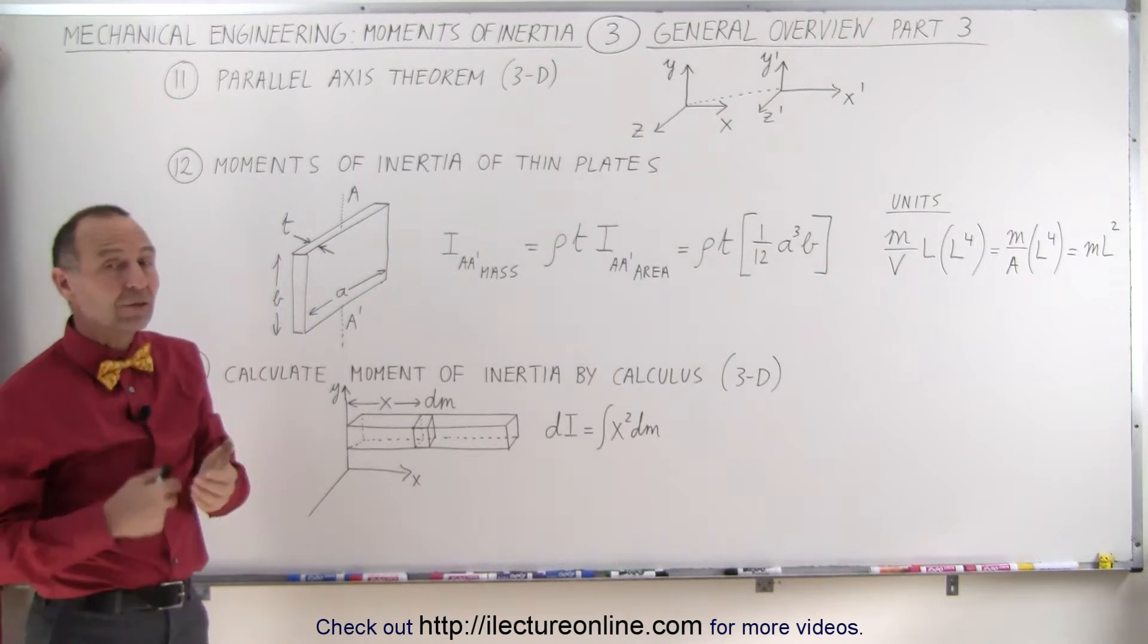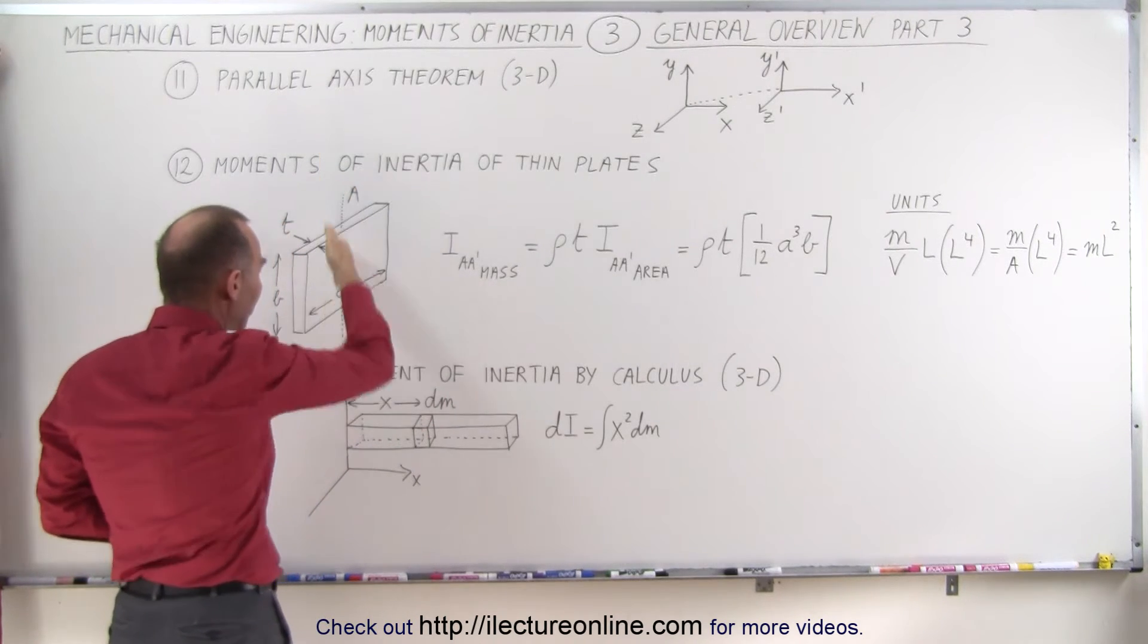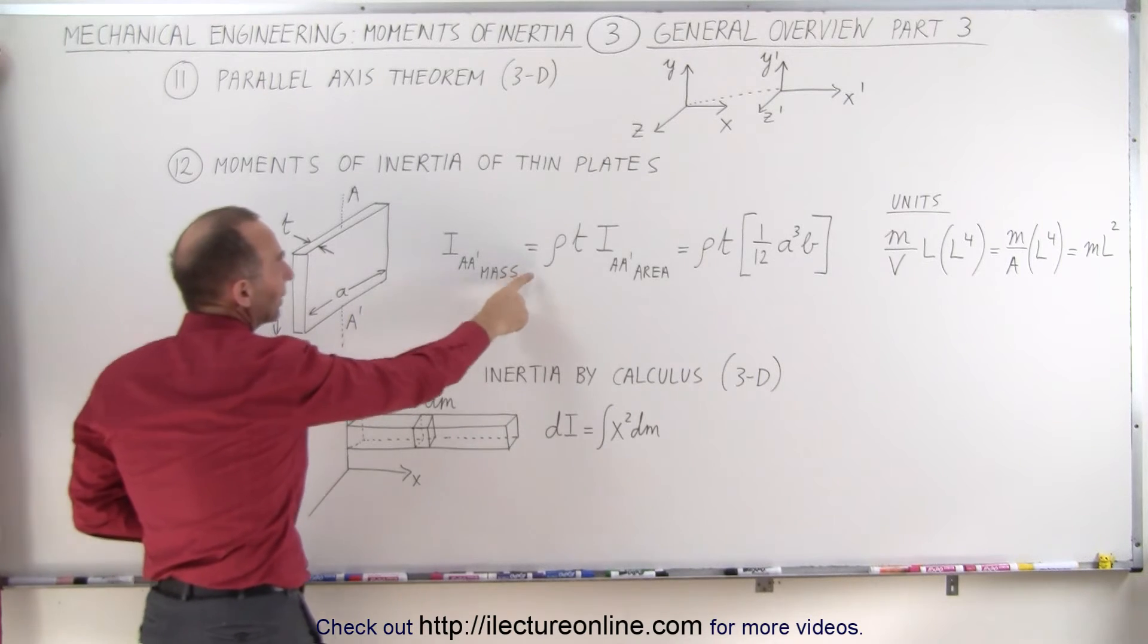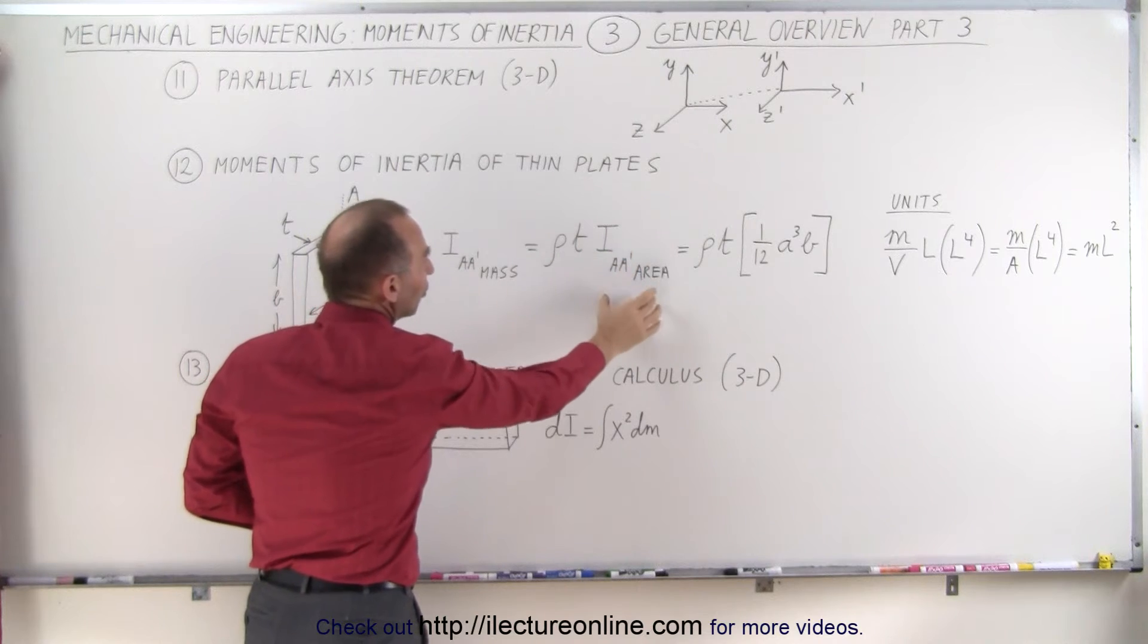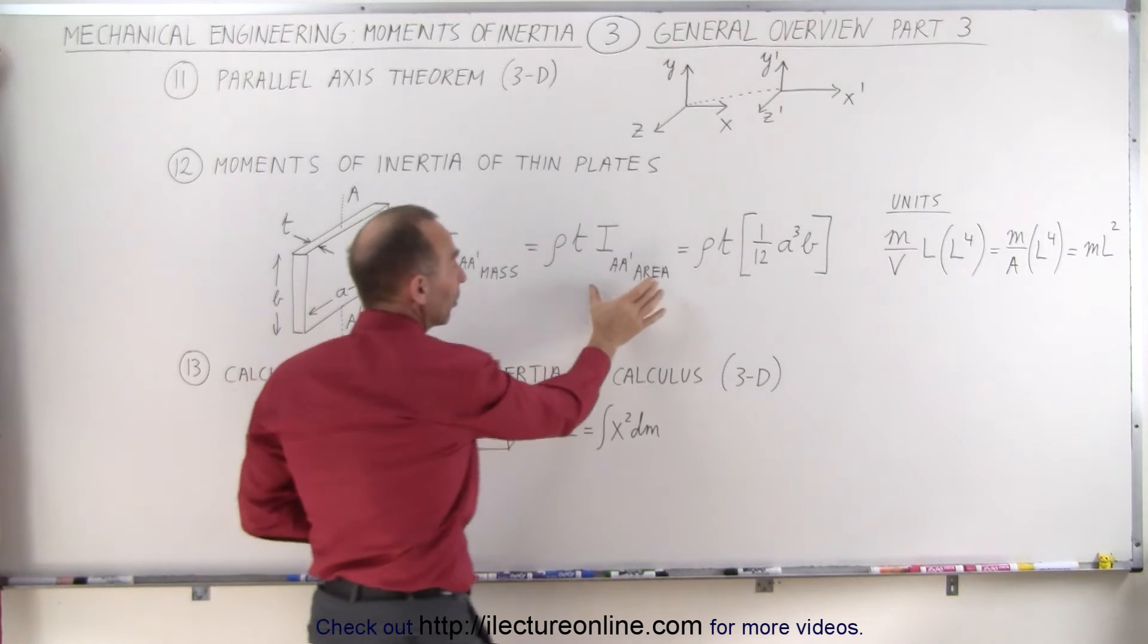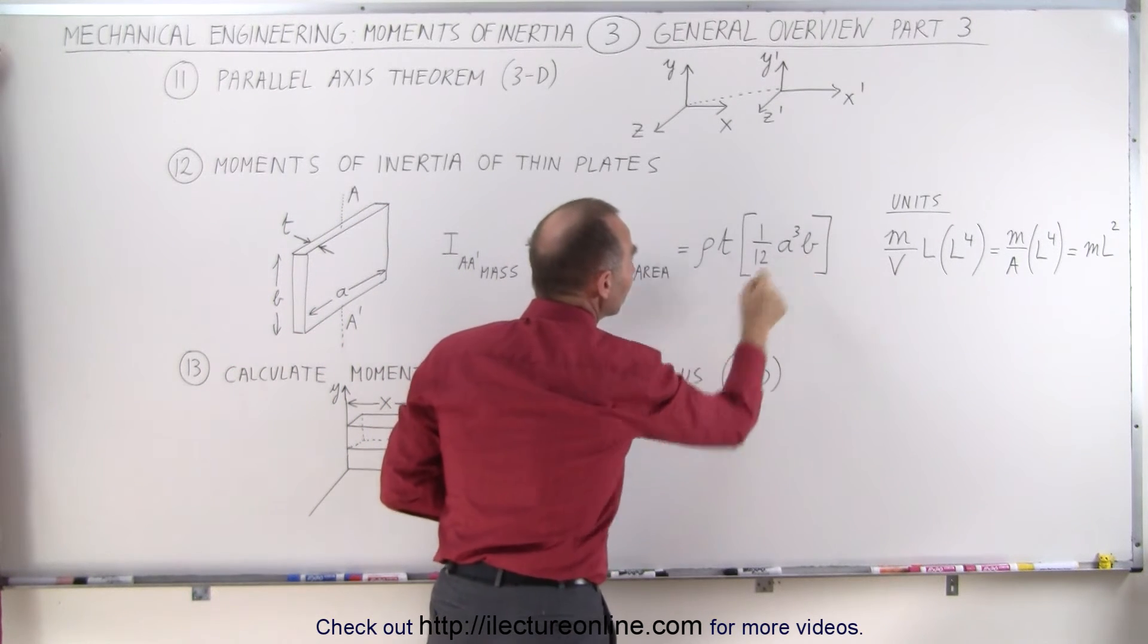We can calculate the moment of inertia about a particular axis of the mass of that object. We can write that as density times the thickness times the moment of inertia of the area, since it's just a thin plate. You can see then if we replace this by what we know, that's equal to 1/12 a cubed times b.